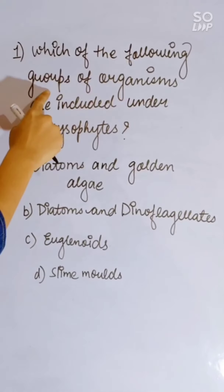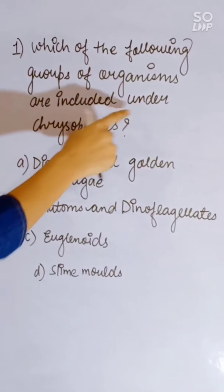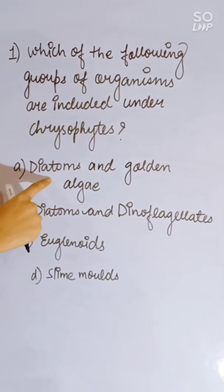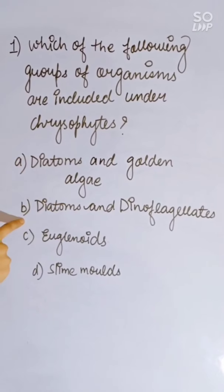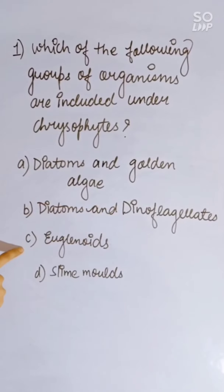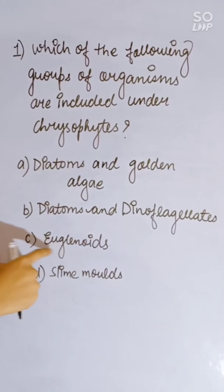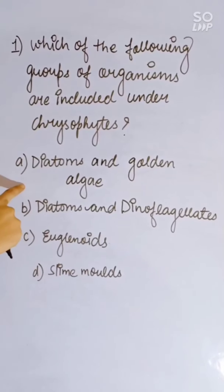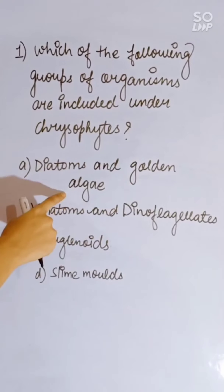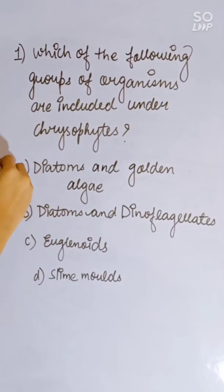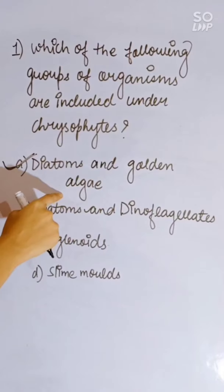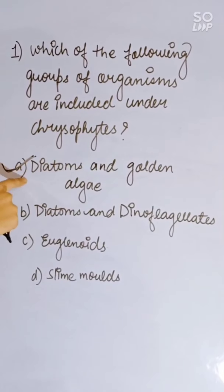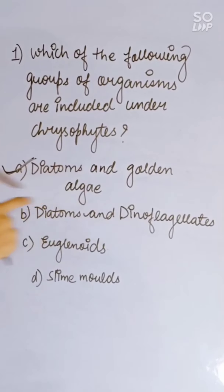Which of the following groups of organisms are included under Chrysophytes? Options: diatoms and golden algae; diatoms and dinoflagellates; euglenoids; or slime molds. Correct answer is diatoms and golden algae, which belong under the Chrysophyte group.